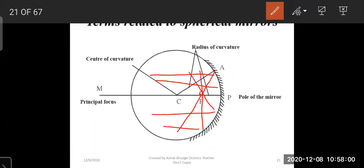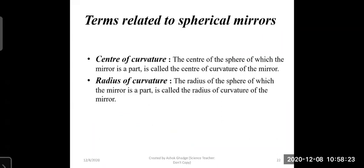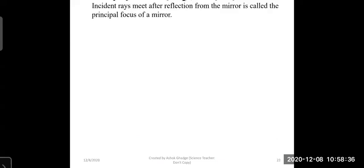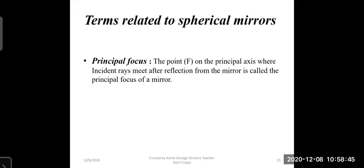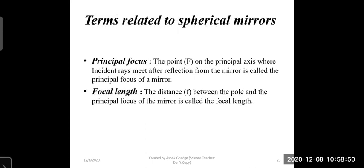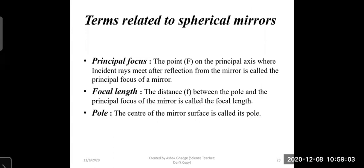For a concave mirror, the principal focus is in front of the mirror, and for a convex mirror, it is behind the mirror. The center of the sphere of which the mirror is a part is called the center of curvature. The radius of that sphere is the radius of curvature. The straight imaginary line passing through the pole and center of curvature is the principal axis. The principal focus F is the point on the principal axis where incident rays meet after reflection. The distance between the pole and the principal focus is called the focal length (small f). The center of the mirror surface is called the pole.